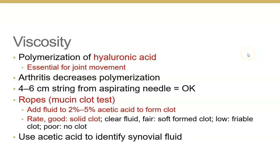Sometimes fluids arrive in the lab in a syringe with no clear identification. You can use acetic acid to help determine whether it is synovial fluid, since other fluids won't form a clot. However, if viscosity is poor due to insufficient hyaluronic acid, the identification is less certain.